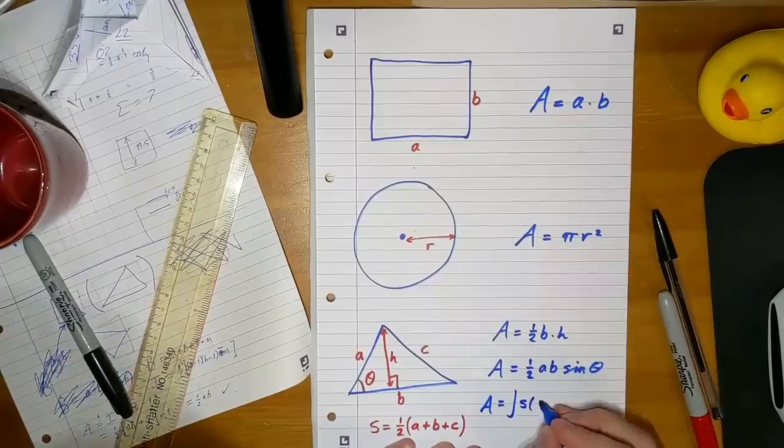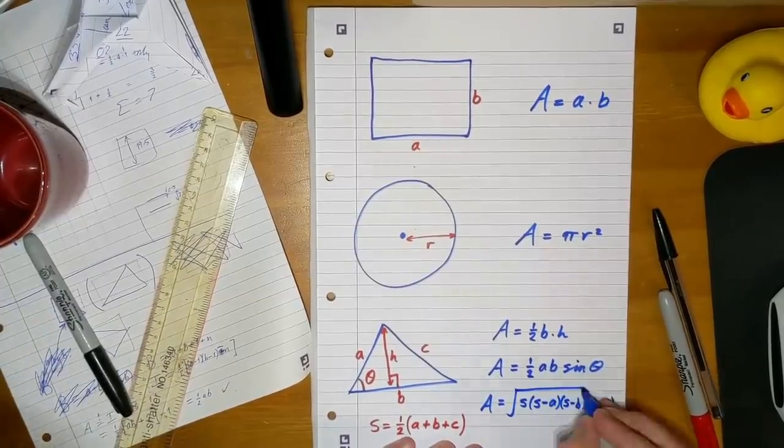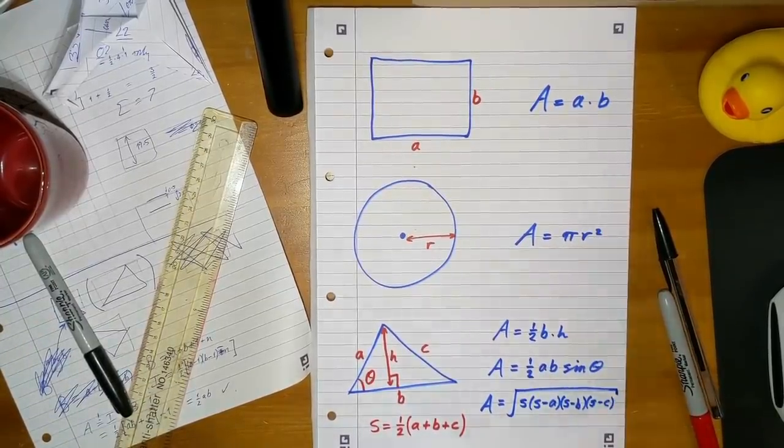If you studied geometry at school, I'm sure you were taught formulas like these for the areas of specific shapes: rectangles, circles, there's like three different ones for triangles. This video is about a fundamentally different kind of area formula, one that works for any shape you can draw on a grid.